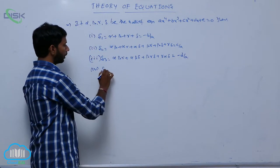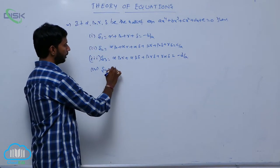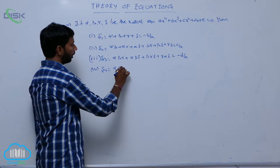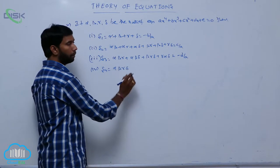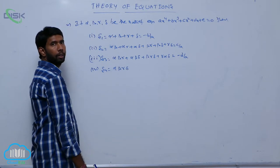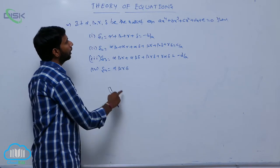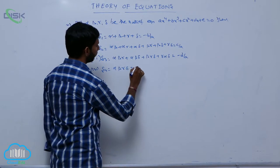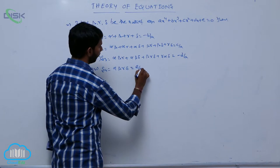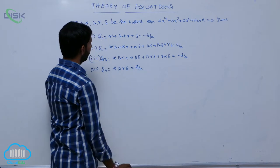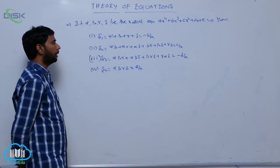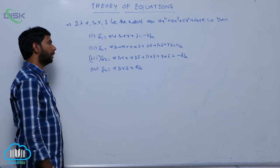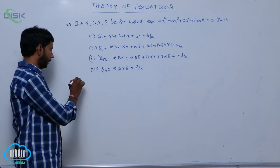S4 is equal to the product of all four roots, that is alpha·beta·gamma·delta, which is equal to E by A.